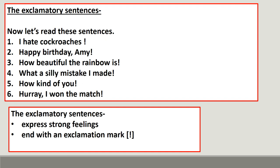Exclamatory sentences. Let's read these sentences: 'I hate cockroaches!' All these sentences talk about feelings — they state strong feelings. 'I hate cockroaches.' 'How beautiful the rainbow is!' 'What a silly mistake I made!' 'Hooray, I won the match!' All these sentences are talking about strong feelings and they end with an exclamation mark. With this, children, we conclude our session on types of sentences. Thank you.